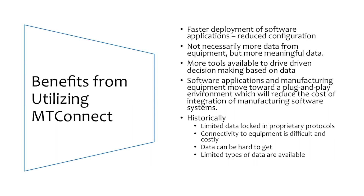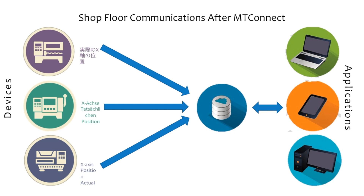When a manufacturer deploys software solutions using data generated by the MTConnect standard, there are many benefits to be realized. Historically, significant configuration work was required to qualify every piece of data collected by giving it an identity, scaling it to common units when required, and characterizing that data with whatever additional information was necessary to define the full meaning of the data. This same process had to be replicated for every software application that needed to use this data. However, when data is available directly from shop floor equipment that is fully qualified with an identity and fully characterized, software applications can be deployed more quickly and at a lower cost.